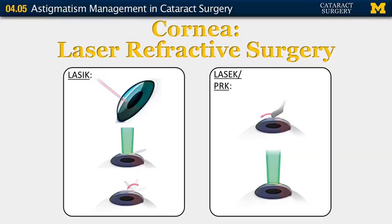Somewhat more predictable would be performing corneal refractive surgery — either LASIK or advanced surface ablation procedures such as PRK — after cataract surgery to treat specific amounts of corneal astigmatism particular to each patient. One potential advantage is that any residual spherical shift after cataract surgery can also be corrected with these corneal refractive surgeries. Of course, the attendant risks of corneal refractive surgery as well as the associated costs all need to be discussed with the patient prior to proceeding.